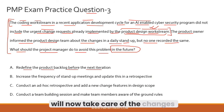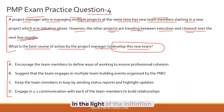Please read the question and try to answer before we solve it together. A project manager managing multiple projects at the same time has new team members starting in a new project in the initiation phase. However, the other projects are trending between execution and closeout over the next few months. What is the best course of action by the project manager to develop this new team?